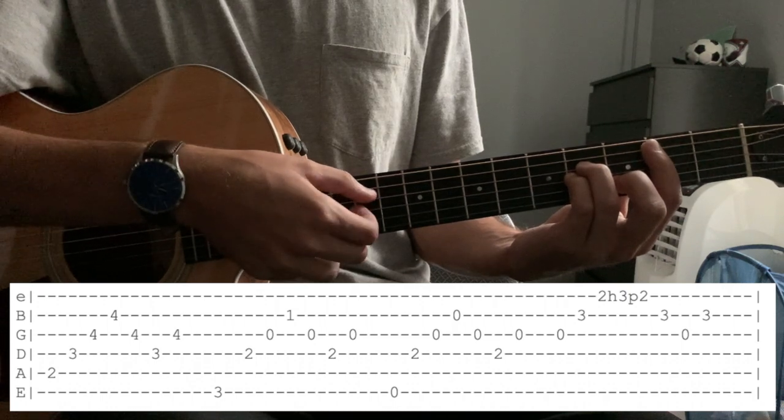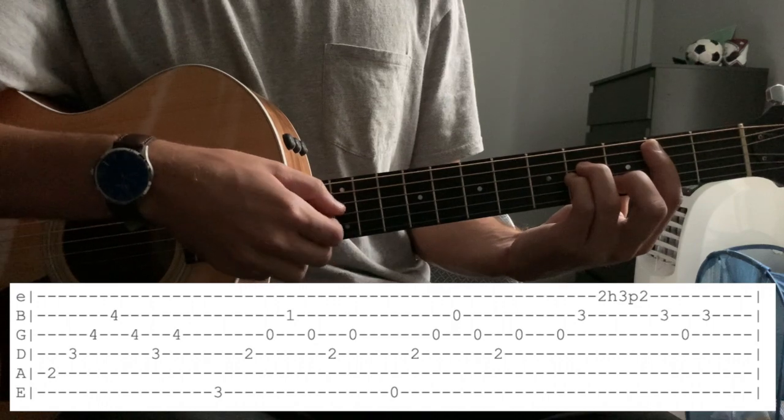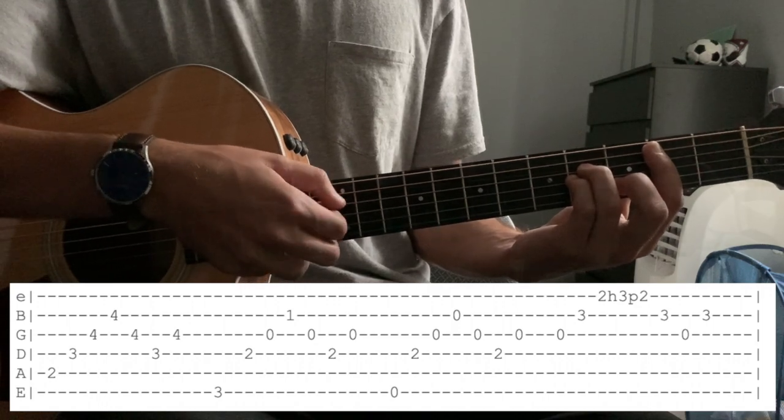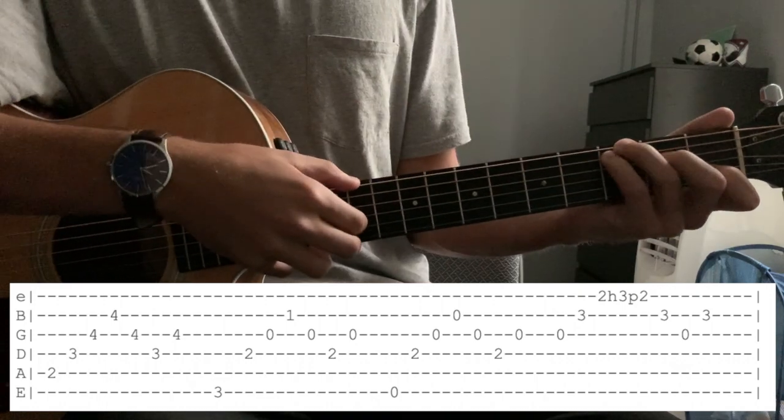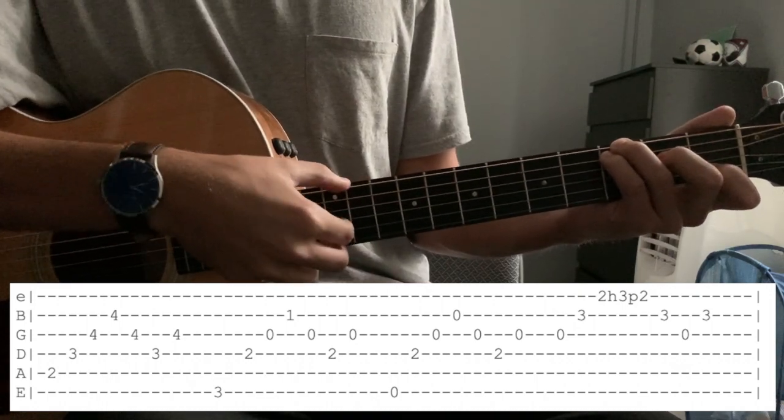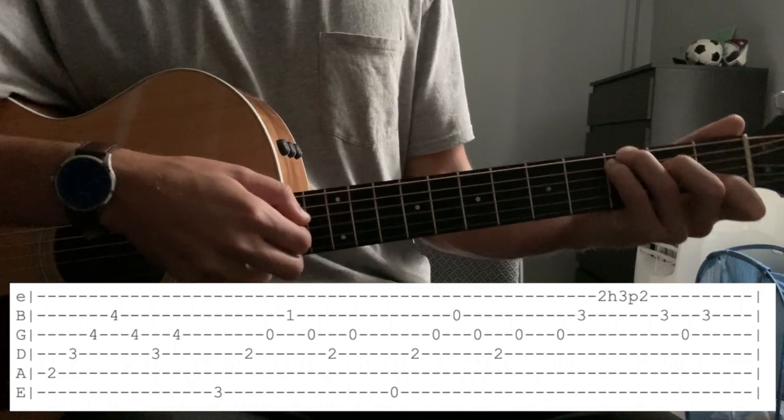And then we pluck G, D, G. So then we go over to a C chord. I play the C with the root G on here. And I pluck the low E string for the root note. After we hit the C chord, we're going to go to an E minor chord.